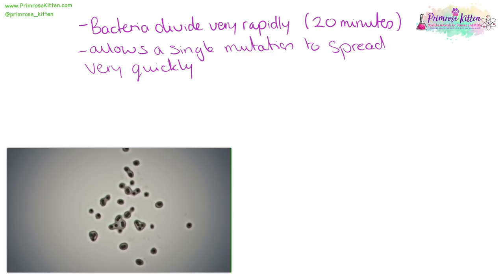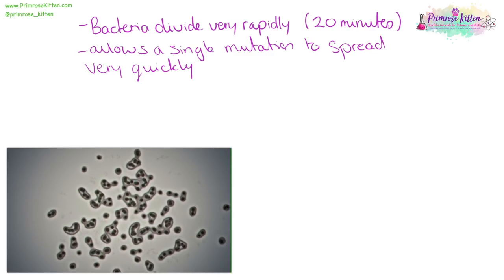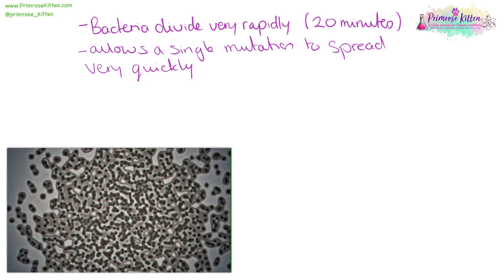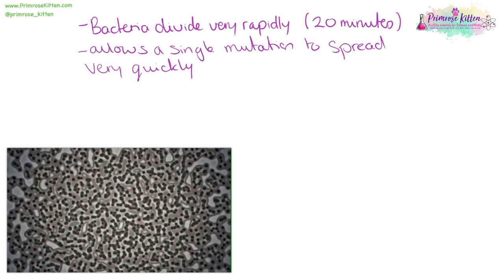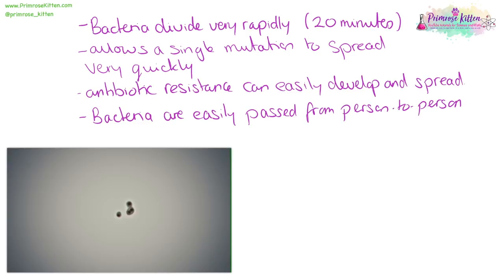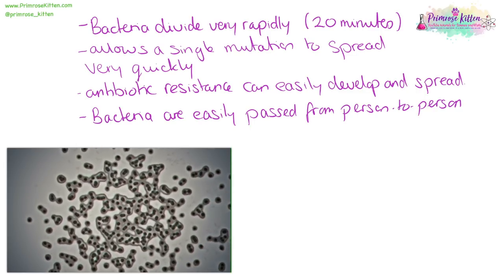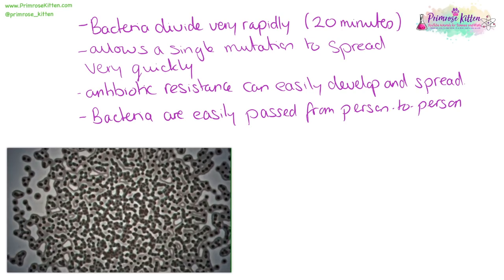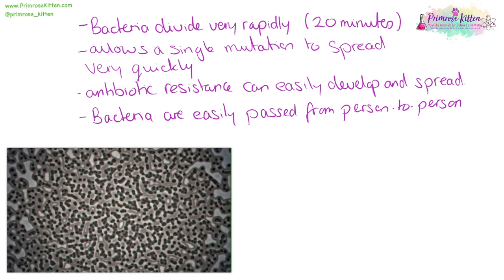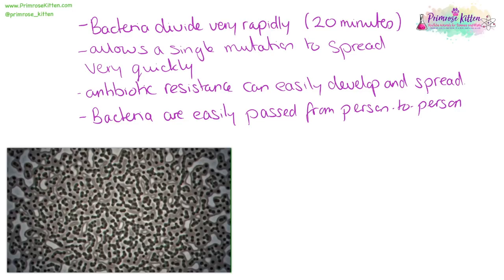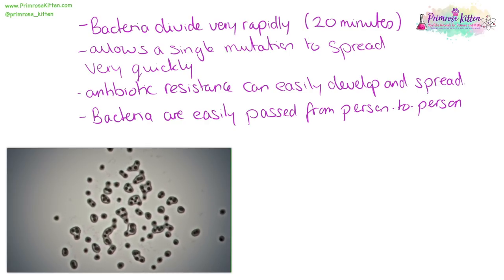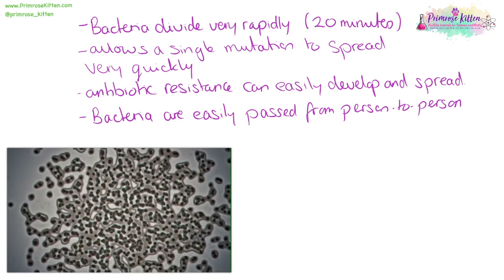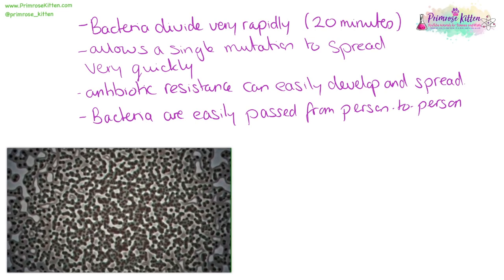Bacteria divide very, very rapidly. Bacteria that is happy, has lots of food, space and nutrients, is going to divide roughly every 20 minutes. This allows a single mutation to spread through the population really quickly. This is going to allow antibiotic resistance to really easily develop and spread due to random mutations. But if those random mutations mean that the bacteria don't get killed by antibiotics, they're going to be selected for by natural selection. And bacteria easily pass from person to person, or from animal to person, which means antibiotic resistant bacteria is going to spread really easily.